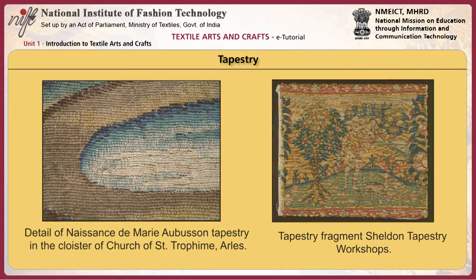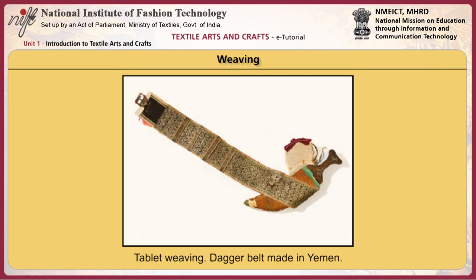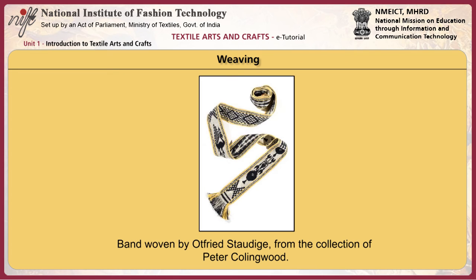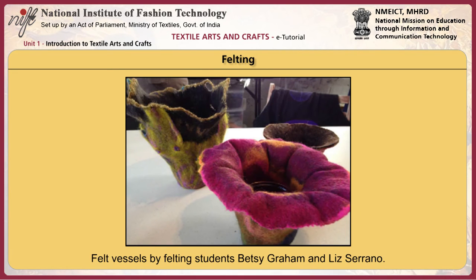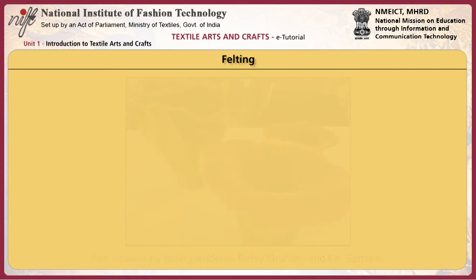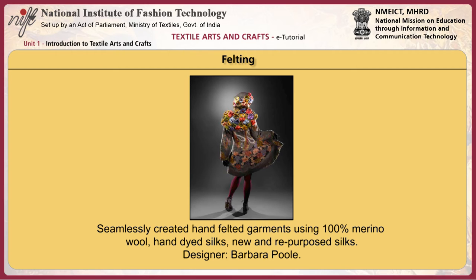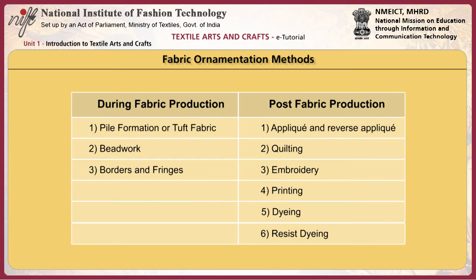Here are examples of tapestry. Tablet weaving — this dagger belt was made in Yemen. This band displays the weaving technique. Another example of weaving. Felt vessels made by felting students. A seamlessly created hand-felted garment using 100% merino wool, hand-dyed silks, and new and repurposed silks. Fabric ornamentation is done during fabric production and post fabric production.